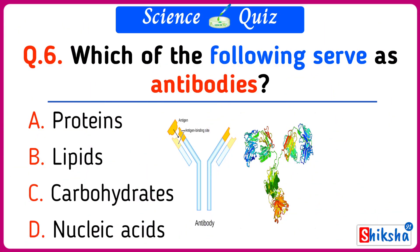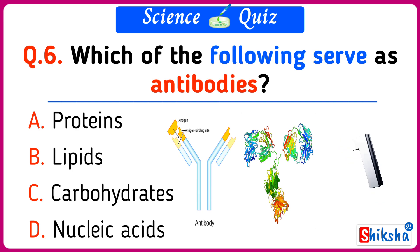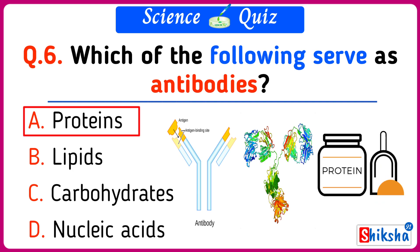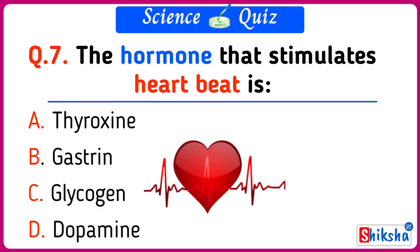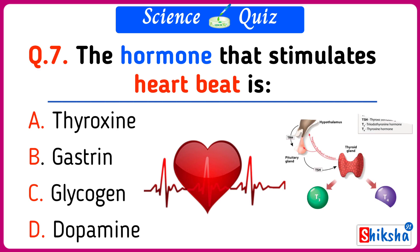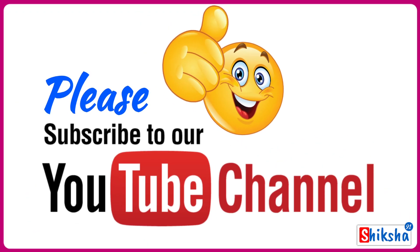Which of the following serve as antibodies? Proteins. The hormone that stimulates heartbeat is thyroxine. For more interesting questions, please subscribe to our YouTube channel.